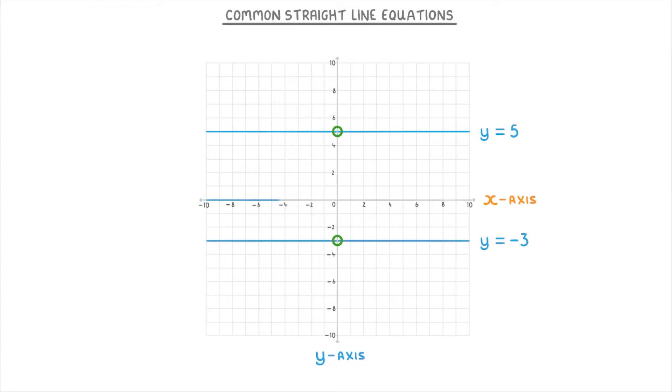If you had a line that went straight along the x-axis, then that would be y equals 0, because it crosses the y-axis at 0. And similarly, a vertical line that goes straight along the y-axis would be x equals 0.